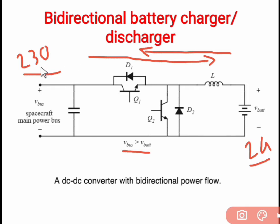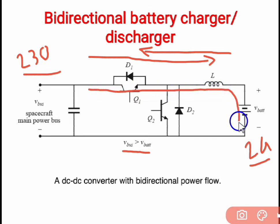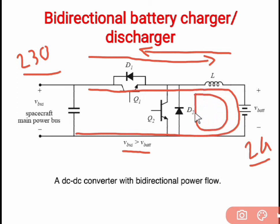First consider the buck converter operation. It converts 230 volts to 24 volts to charge the battery. Transistor Q1 is switched on, and current flows from transistor to inductor, inductor to battery, and battery to the source. When Q1 is off, diode D2 is in forward bias condition and the inductor L releases energy in the same direction. When Q1 is operated by turn-on and turn-off from the Q1 driver circuit, this converter operates as a buck converter.